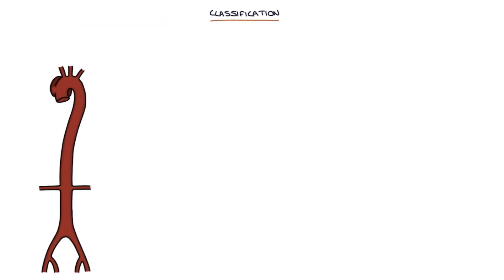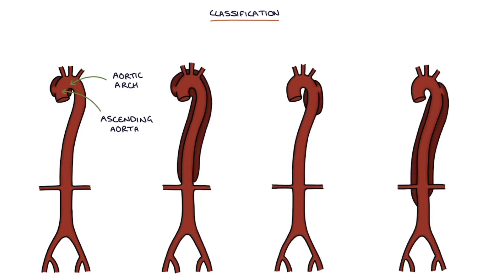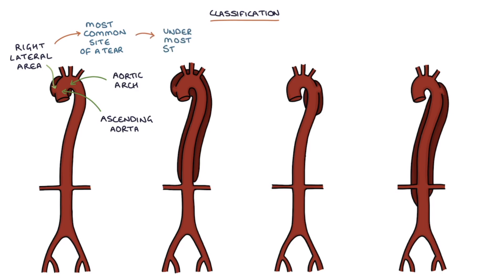Let's talk about the classification. Aortic dissection most commonly affects the ascending aorta and the aortic arch, but it can affect any part of the aorta. The right lateral area of the ascending aorta is the most common site of a tear in the intima layer, as this is under the most stress from blood being pumped hard out of the heart.